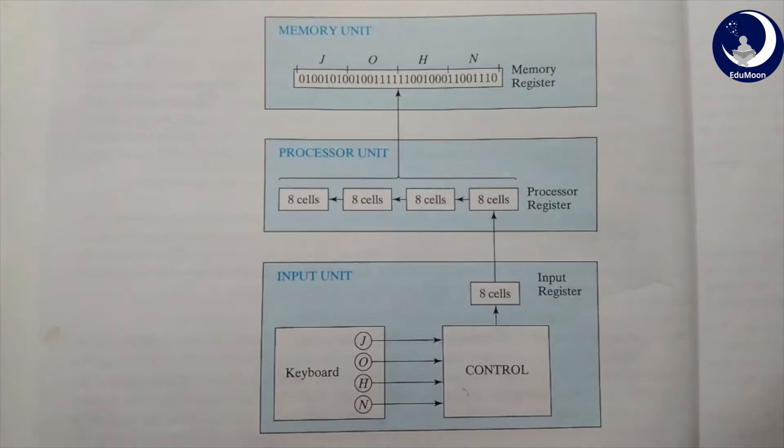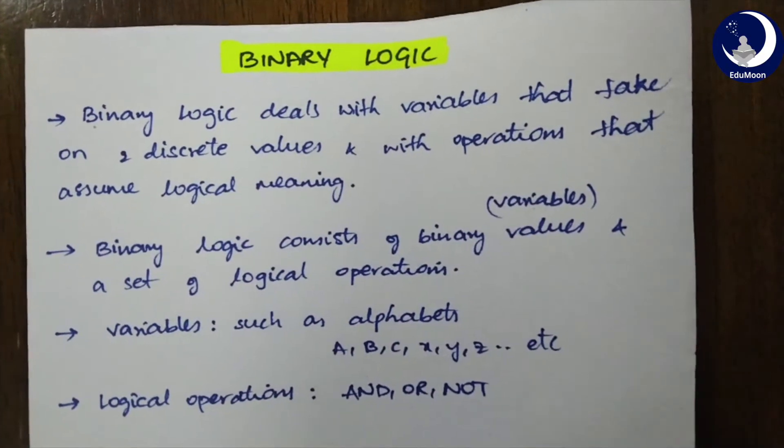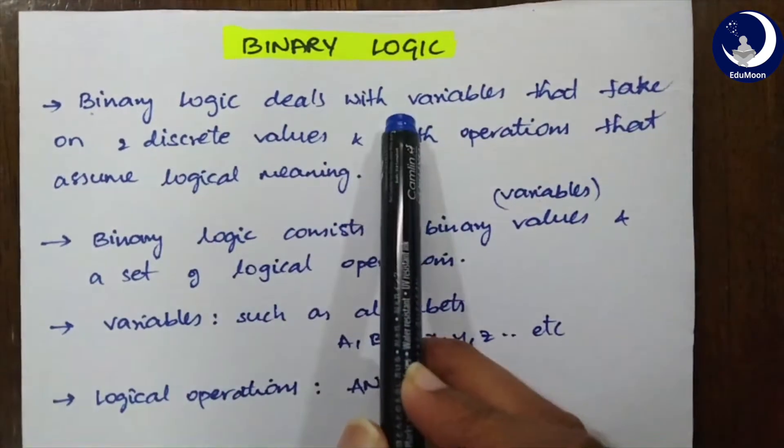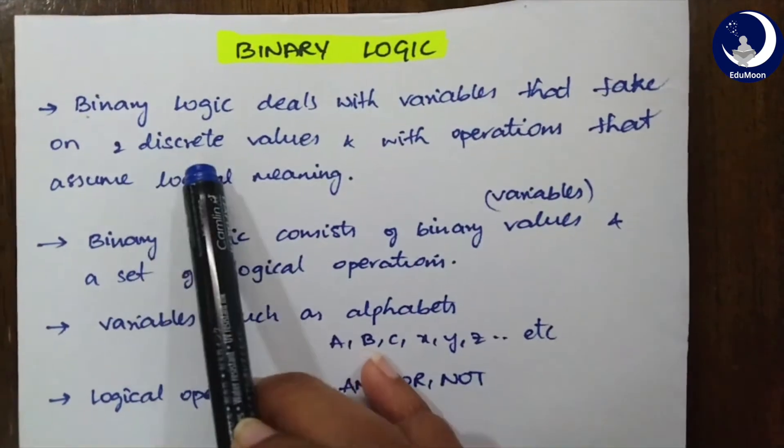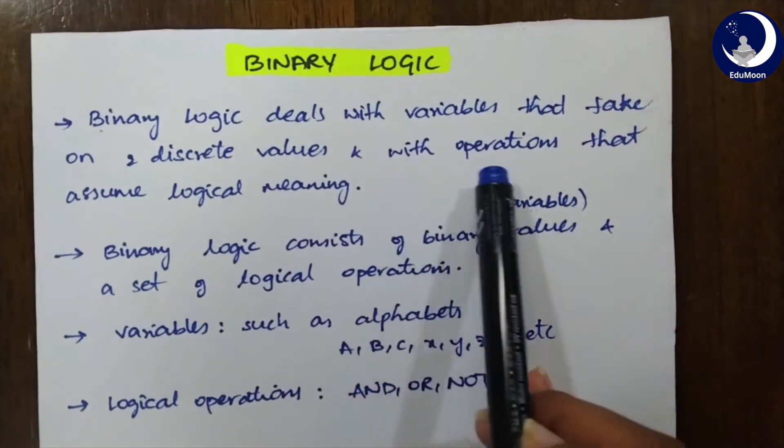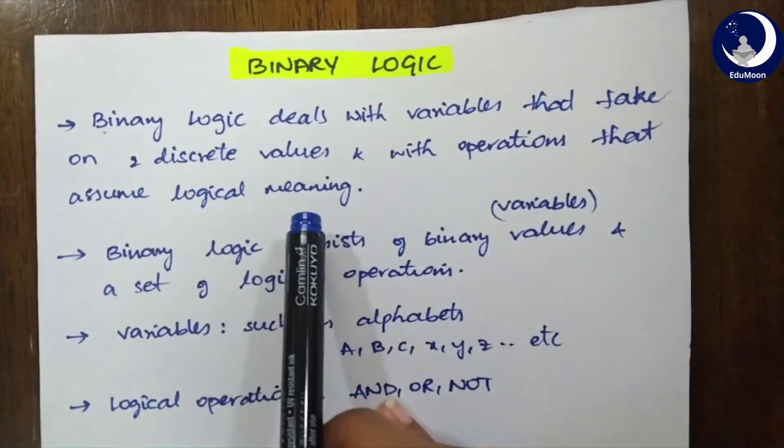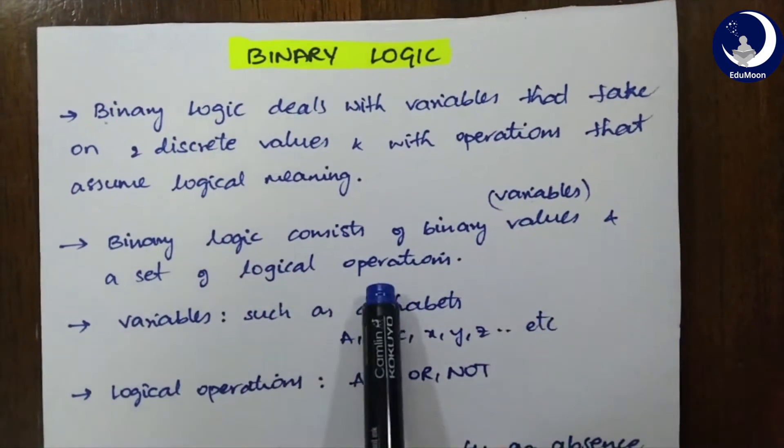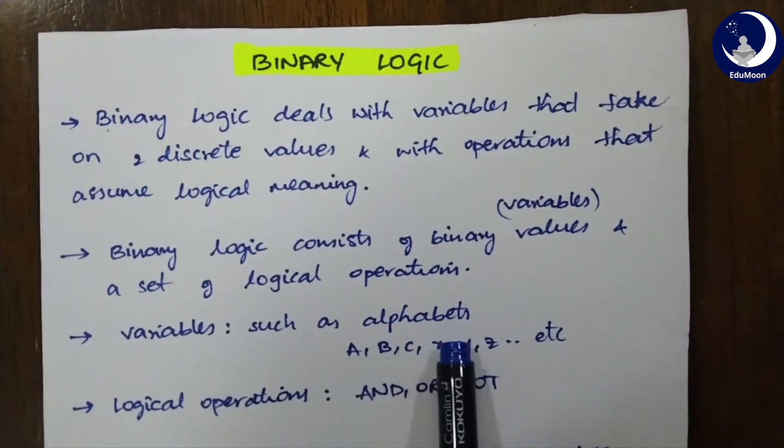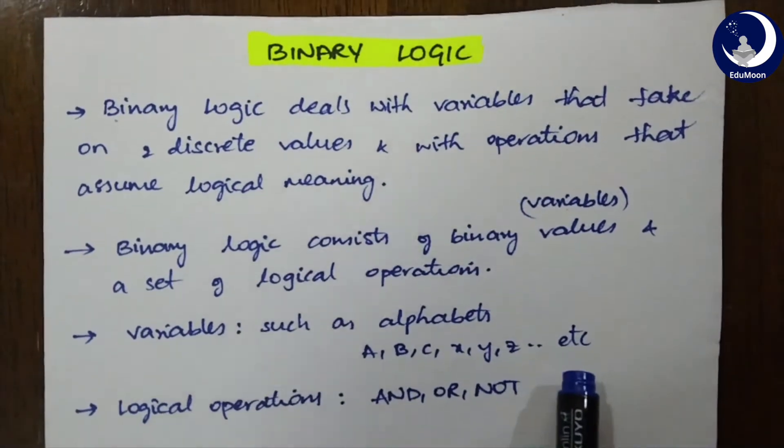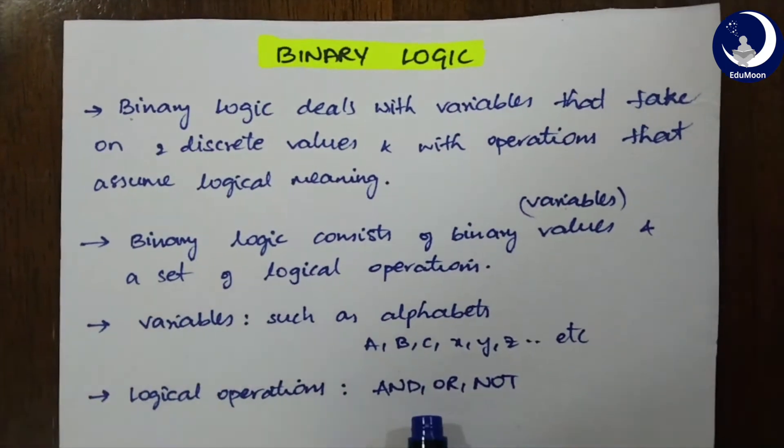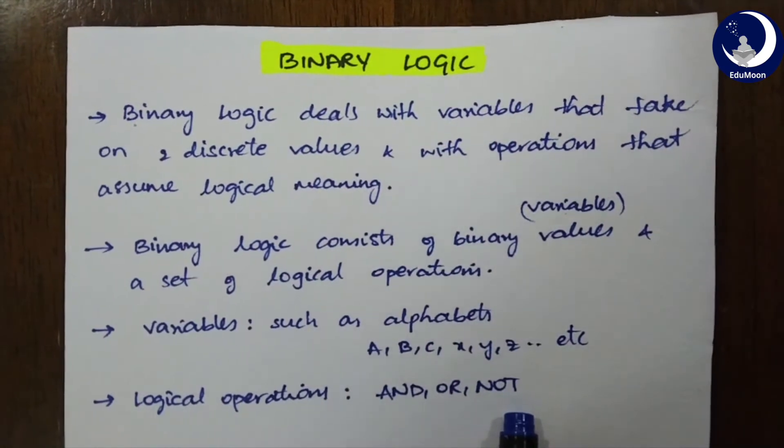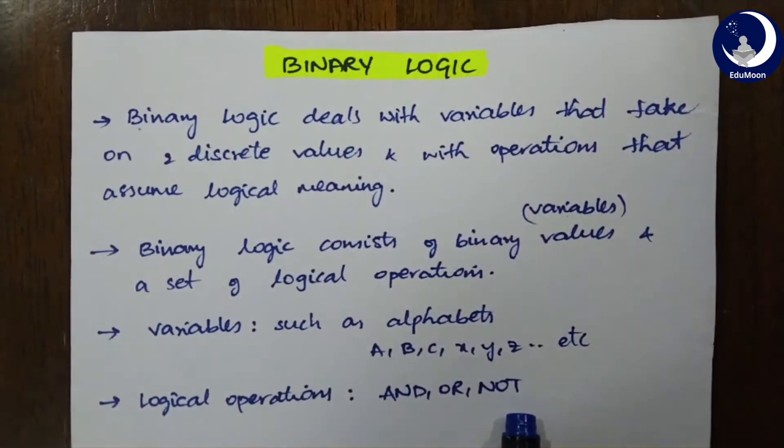Now, let's jump into binary logic. Let's look at a few definitions for binary logic. Binary logic deals with variables that take on two discrete values and with operations that assume some logical meaning. Binary logic consists of binary variables and a set of logical operations. Usually, the variables are alphabets like A, B, C, X, Y, Z, anything it can be. And logical operations, the basic logical operations here, we are considering to be AND, OR, and NOT. In the next unit, we will be going into a broader aspect of logical operations and Boolean algebra.